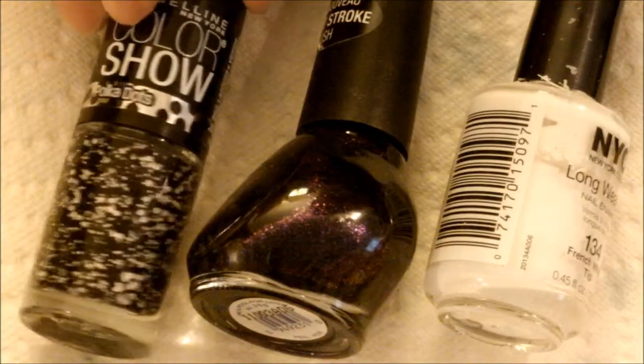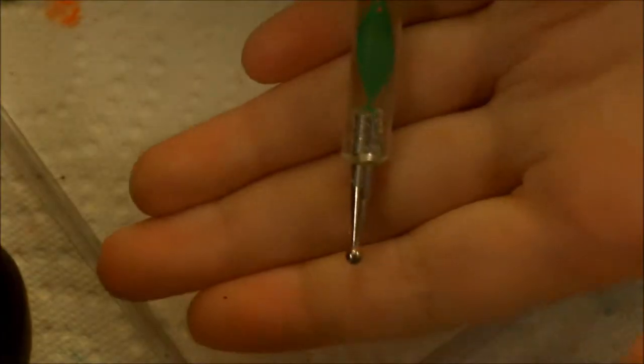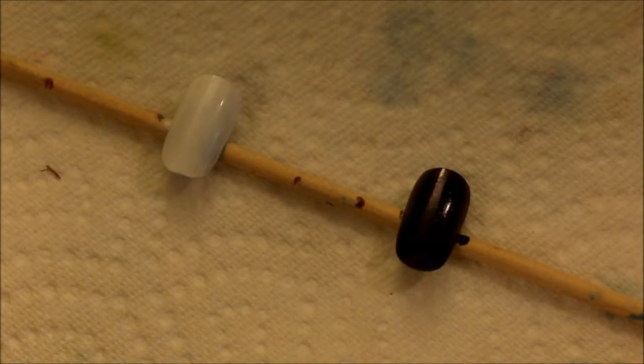You're going to need a white polish, a black polish, and a polka dot one if you'd like. You're going to need a dotting tool and also paint your nails with the white and the black.